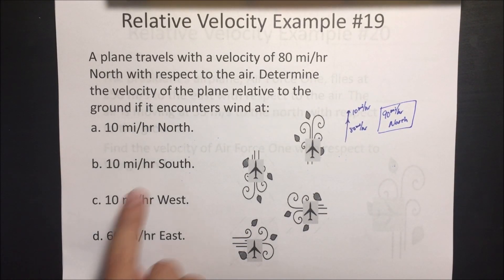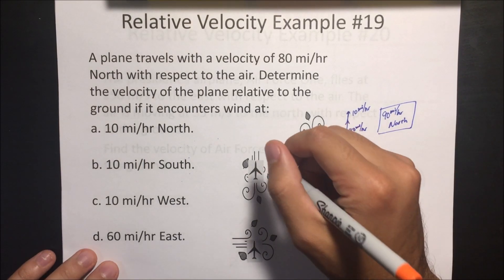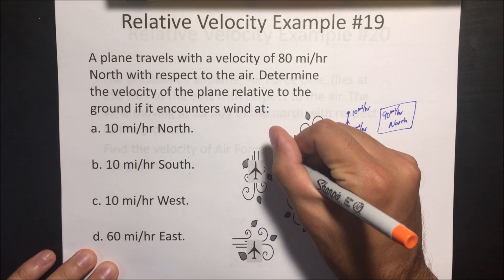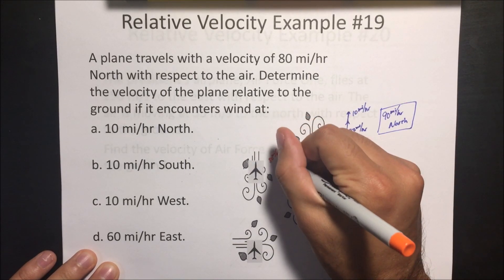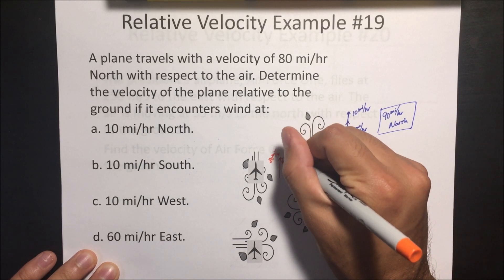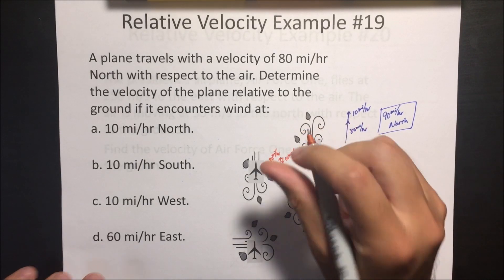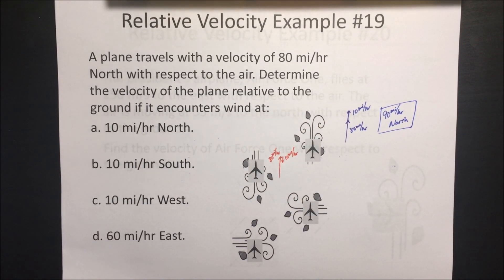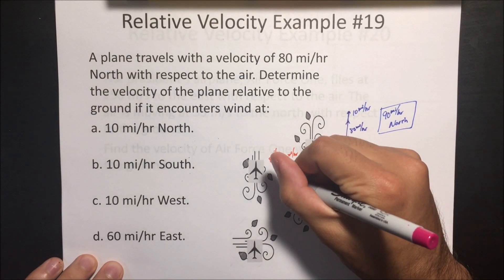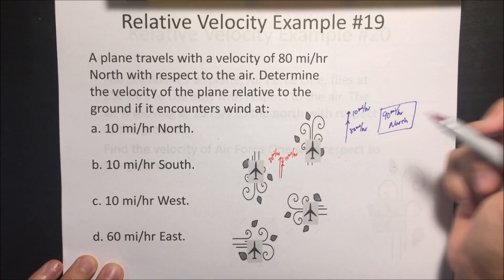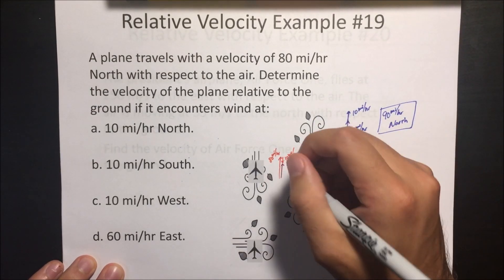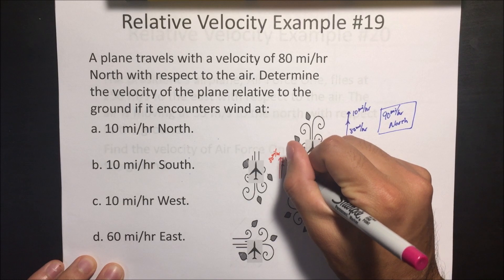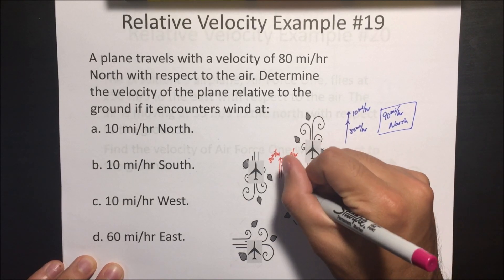What happens if the wind goes 10 miles an hour south? In this case the plane is going 80 miles an hour, but the wind is going the other way at 10 miles an hour. The resultant vector goes from where you started to where you ended up — you subtract because the plane is going against the wind. So it's going to be slowing down the plane to 70 miles an hour, but still north.